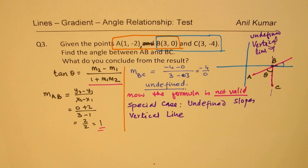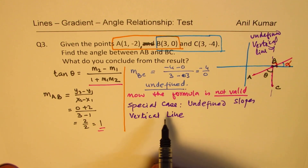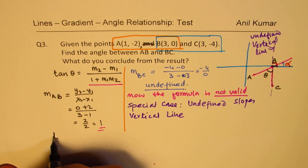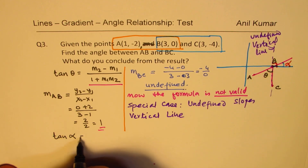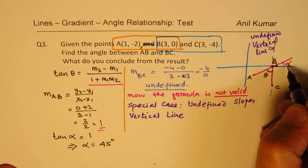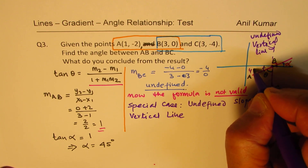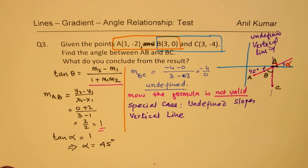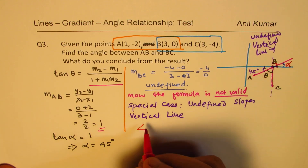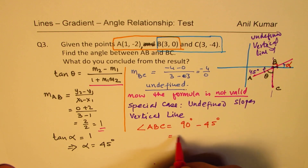The angle of the vertical line BC with the x-axis is 90 degrees. So 90 minus alpha can give us the angle between the lines. We know slope equals tan theta, so tan of alpha equals 1, which gives alpha equals 45 degrees. Since BC is a vertical line, angle ABC equals 90 minus 45, which is 45 degrees.